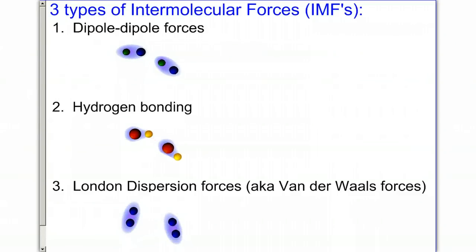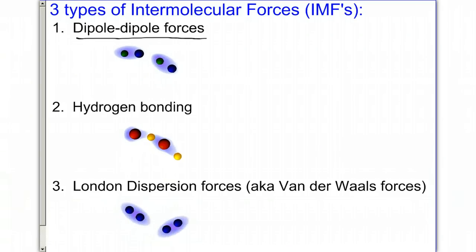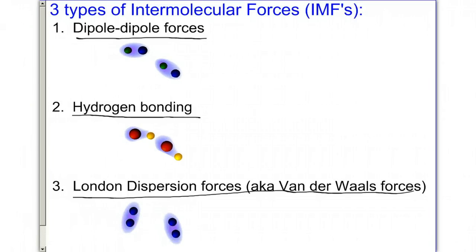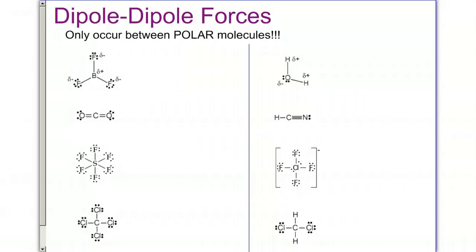There are three different types of intermolecular forces: dipole-dipole forces, hydrogen bonding, and London dispersion forces, which are also known as Van der Waals forces. We're going to start with dipole-dipole forces first. This force will only occur between polar molecules, which also means this only happens with covalent compounds. We look at Lewis structures to decide whether or not molecules have a dipole-dipole force.